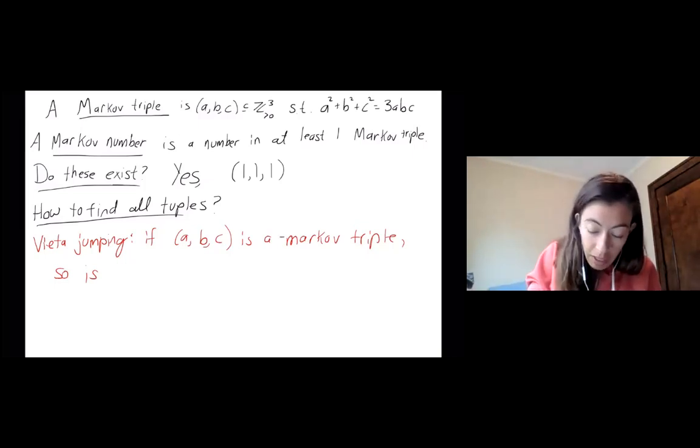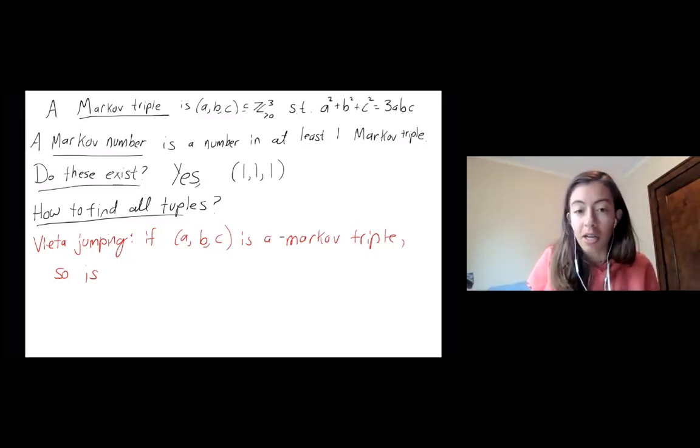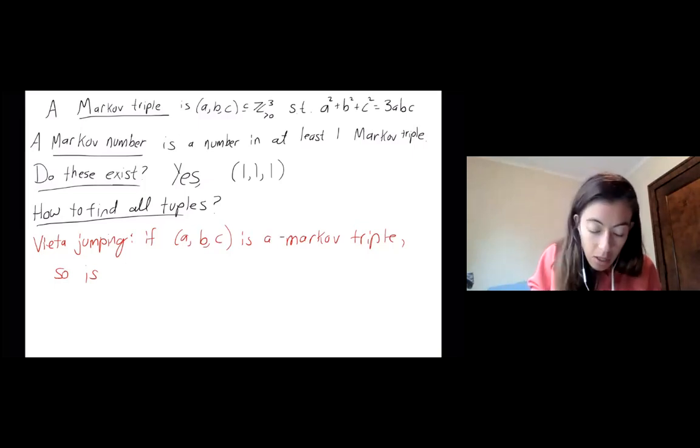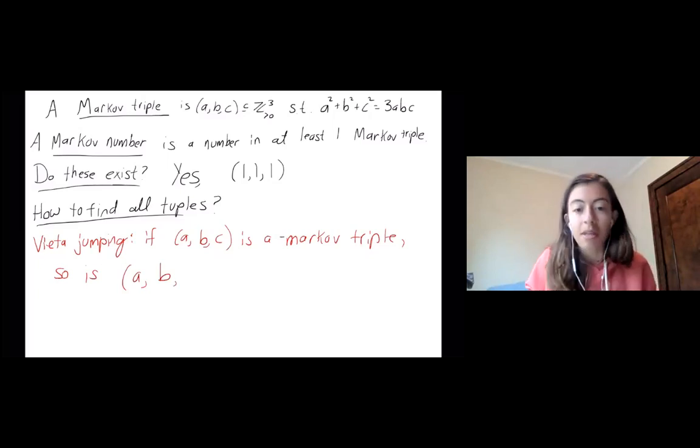So if ABC is a Markov triple, such as 111, so is, and I'm just going to replace C with something, but you're right, it didn't matter. The order doesn't matter. I could have replaced B or A.